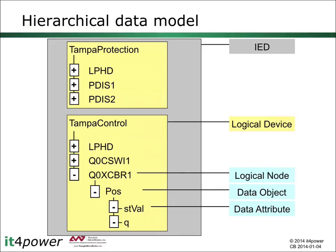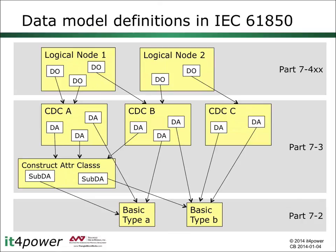To summarize this part of the tutorial: the information available within an IED is exposed as an IEC 61850 data model. This data model is hierarchical and consists of logical devices, logical nodes, data objects, and data attributes. Logical nodes with their data objects are defined in part 7.4. The data objects refer to common data classes as a structured type, which are defined in part 7.3. A common data class is a collection of data attributes that are either of a basic type defined in part 7.2 or of a constructed attribute class. In the next part, we will step by step explain how you can create a data model of a device.